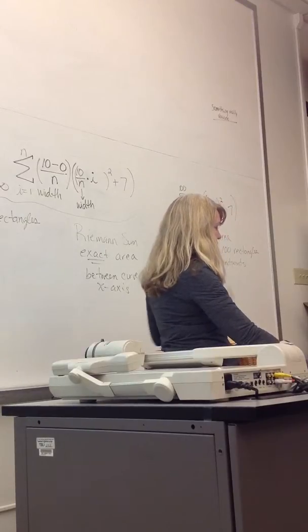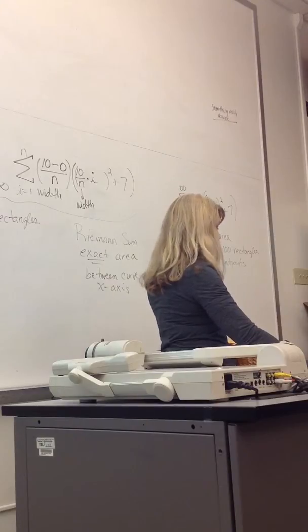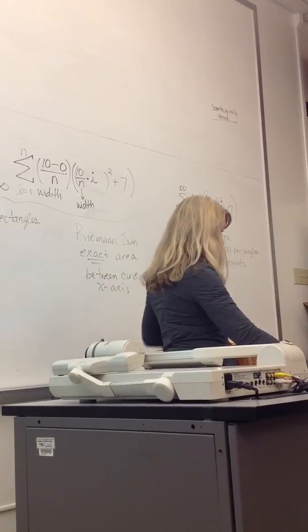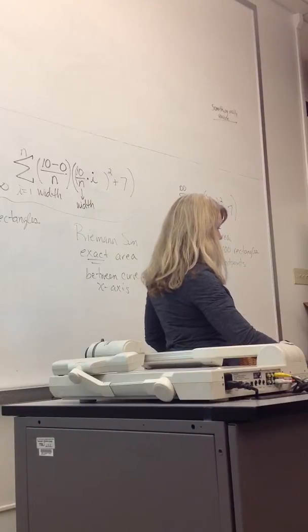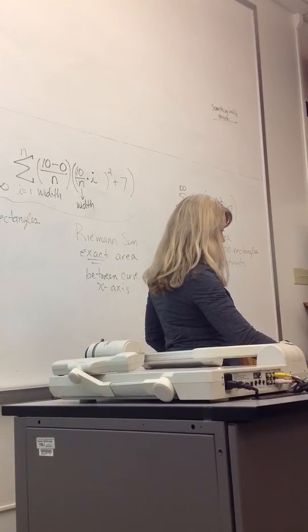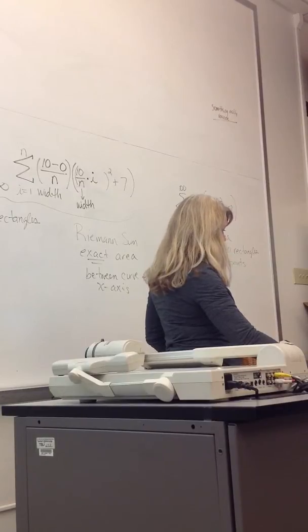So I choose that function by hitting 7 and enter, or go down and arrow down on top of it and hit enter. And then it asks for lower limit. We're using 0 for our lower limit. And then it asks for upper limit. We're using 10 as our upper limit.